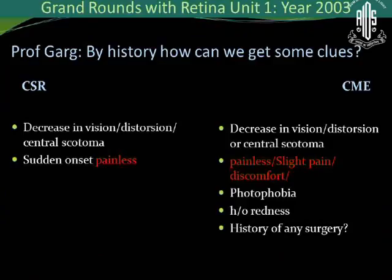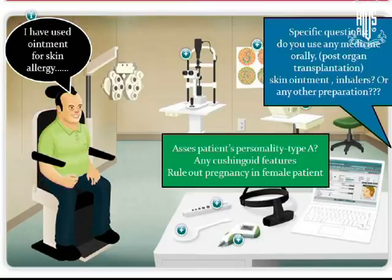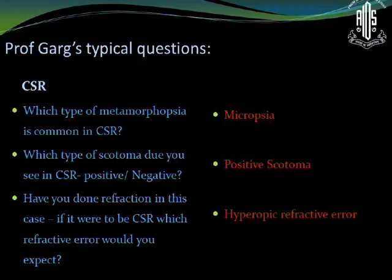If you go by the history, both conditions have different presentations. What is important is the way we elicit history in a patient suspected of CSR. If you ask, have you used any steroids, patients may not always tell you. But if you ask a very pointed question — do you use any skin ointments, do you use any inhalers — they may give you the correct answer. It is also important to assess the patient's personality and rule out pregnancy in a female patient. These were Dr. Gerg's typical questions.